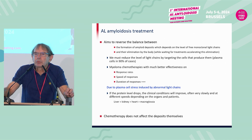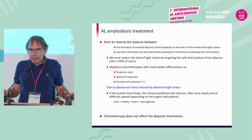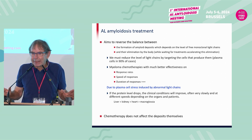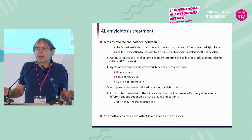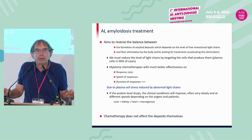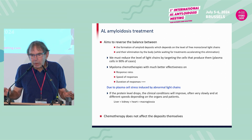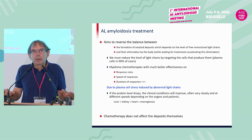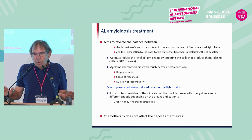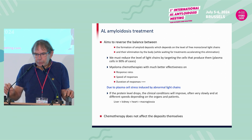The goal of treatment is to reverse the balance between the formation of amyloid deposits — which depends on the level of free light chain — and their elimination by the body, while waiting for treatments accelerating this elimination. You have to reduce free light chain levels by targeting the cells that produce them, which are plasma cells in 90% of cases. If you have a drop in light chain, the clinical condition will improve, but it's very slowly and differs from patient to patient depending on organ — relatively rapid for liver, slower for others. Chemotherapy does not affect the deposits themselves.